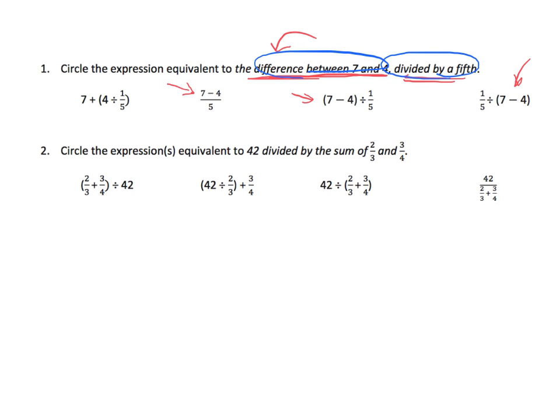The second part says take that difference and divide by a fifth. That immediately means not that one, not that one, it's this one. Divide by a fifth. And there's our answer. So there's the difference between 7 and 4 divided by a fifth.